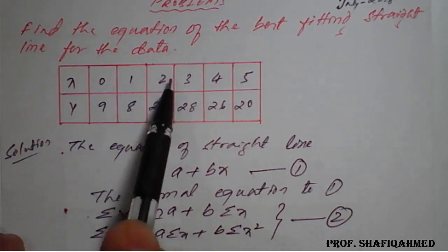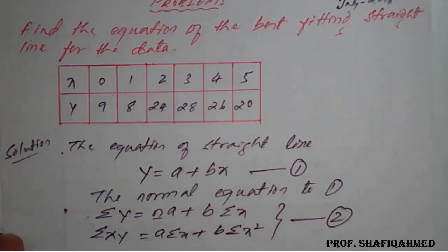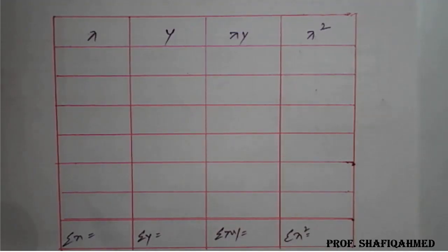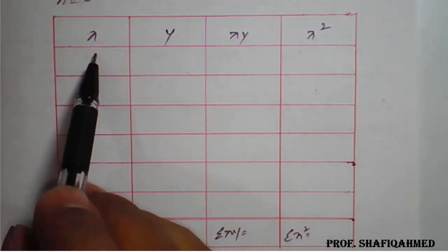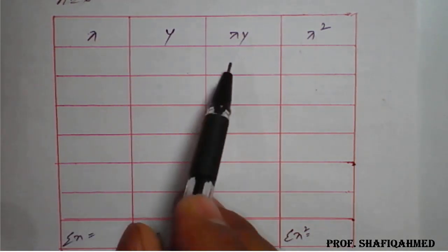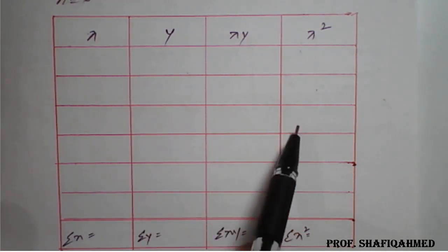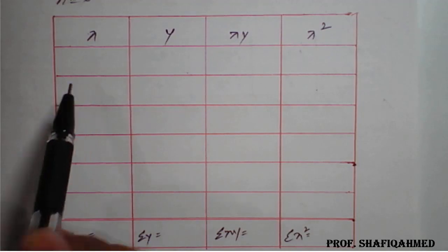You can see here the value of n. If you count 1, 2, 3, 4, 5, 6 - so n value is 6 here. That we'll note down. So n value is 6. These are the values for x. We have to note down the values of y, then xy and x squared.